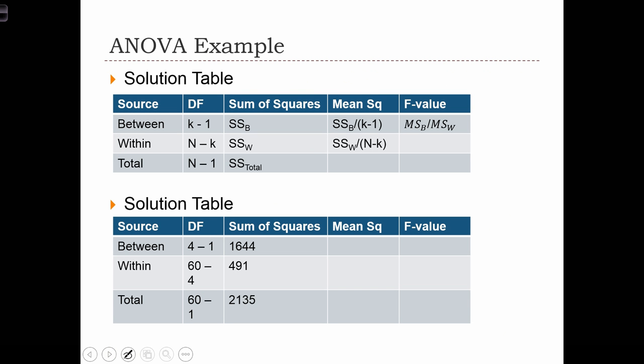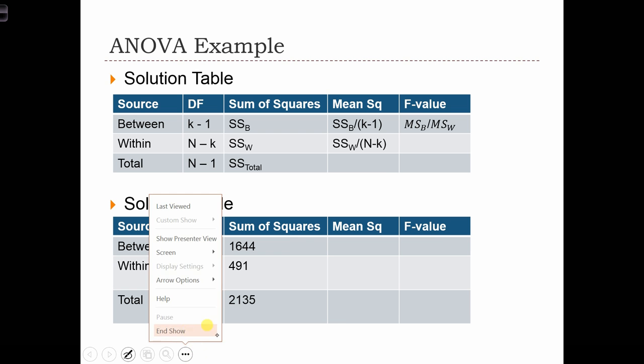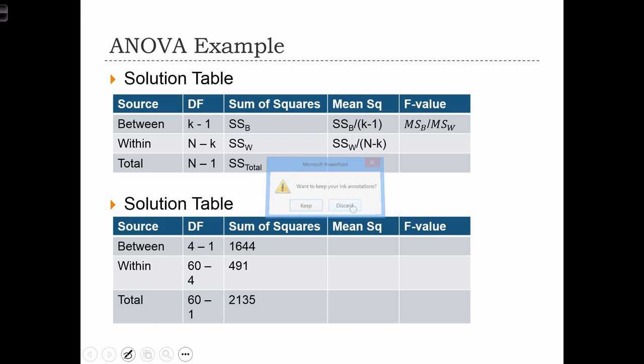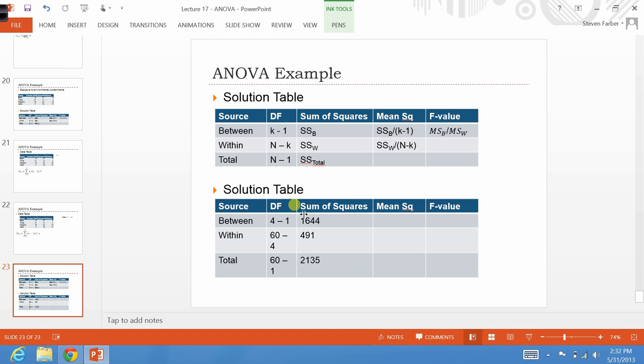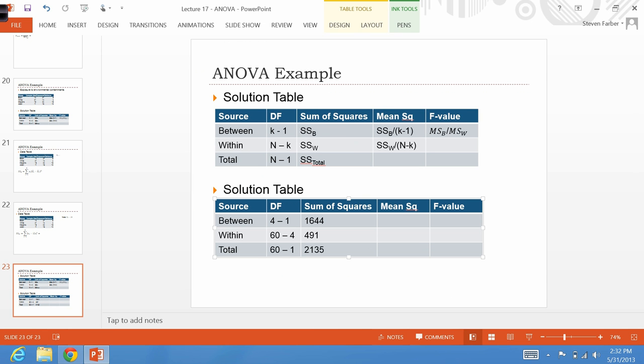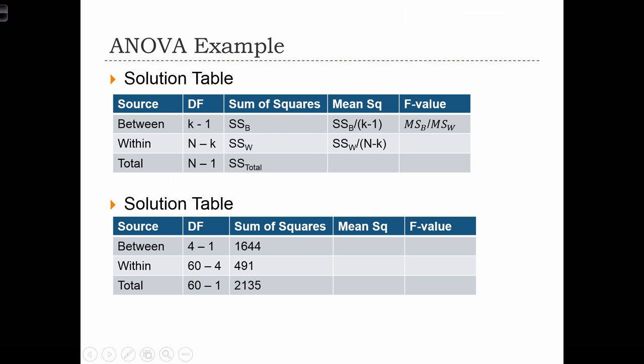So let's fill in what we know so far. Let me make this table a little bit neater. So first of all, we've calculated this. We've said that the between sum of squares is 1644, and the within was 491. The degrees of freedom for the numerator is going to be 4 minus 1, which equals 3.